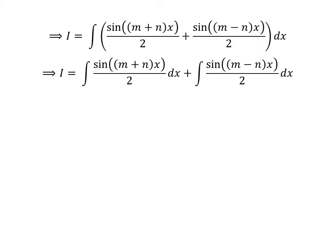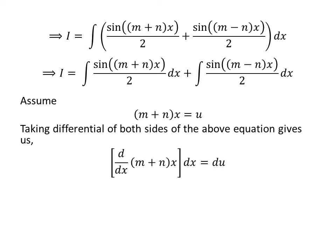Let us solve the integral of sine of (m plus n) times x upon 2 with respect to x. I have applied the substitution method. Let us assume m plus n times x is equal to u. Differentiating both sides gives us m plus n times differential of x is equal to differential of u. Taking (m plus n) to the right-hand side, differential of x is equal to 1 upon (m plus n) times differential of u.